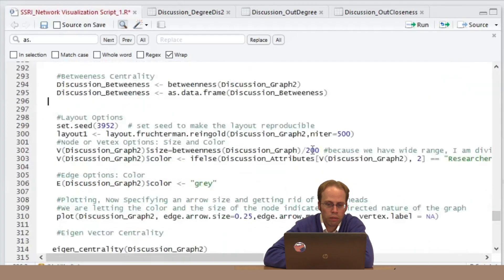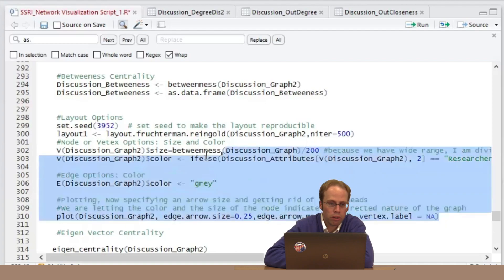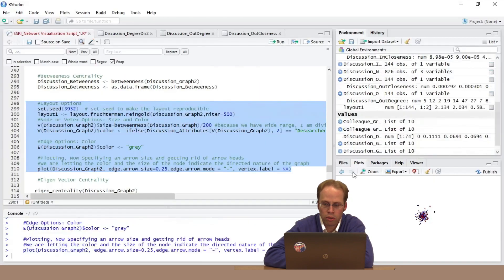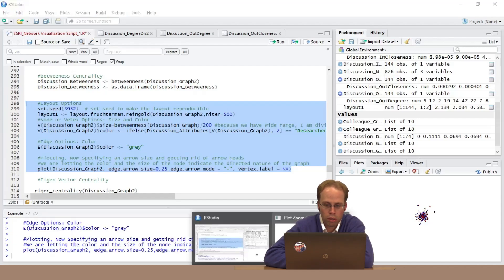So I'm going to, so here I've already put in the statement, I'm dividing it by 200. This is just a general guess to see that we do not have our high betweenness people blocking out the sun. Let's zoom and look.